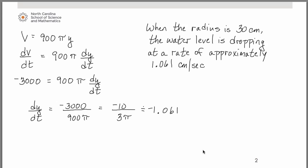So that rate is, of course, a negative quantity. We can conclude that when the radius is 30 centimeters, the water level is dropping at a rate of approximately 1.061 centimeters per second. Take note of the units of measure on that answer. We were trying to find dy/dt, and y represents a linear measurement, a height, which is measured in centimeters in this case. That's why it's centimeters per second.